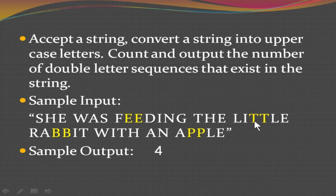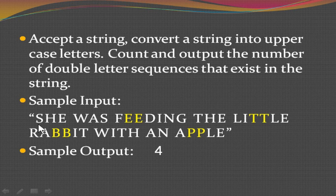After counting the number of double letters, you can see four of them, so you are going to display it as four. The sample output will change according to the input. To solve this, you have to take two characters at a time and compare them. For example, take the character at position zero with position one — index zero and index one are checked. If the letters are the same, then you count. If they are not the same, you continue to the next iteration.